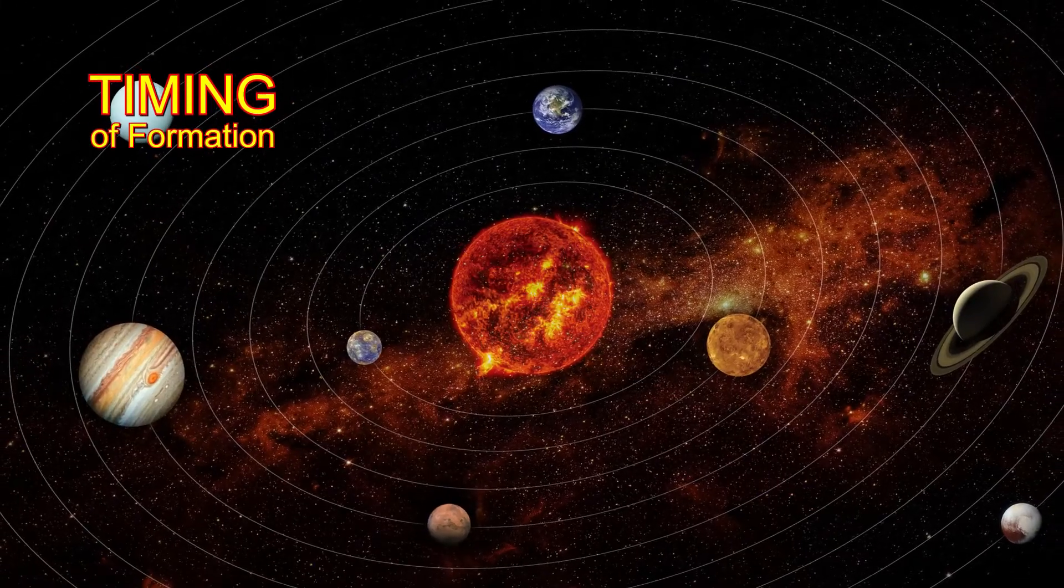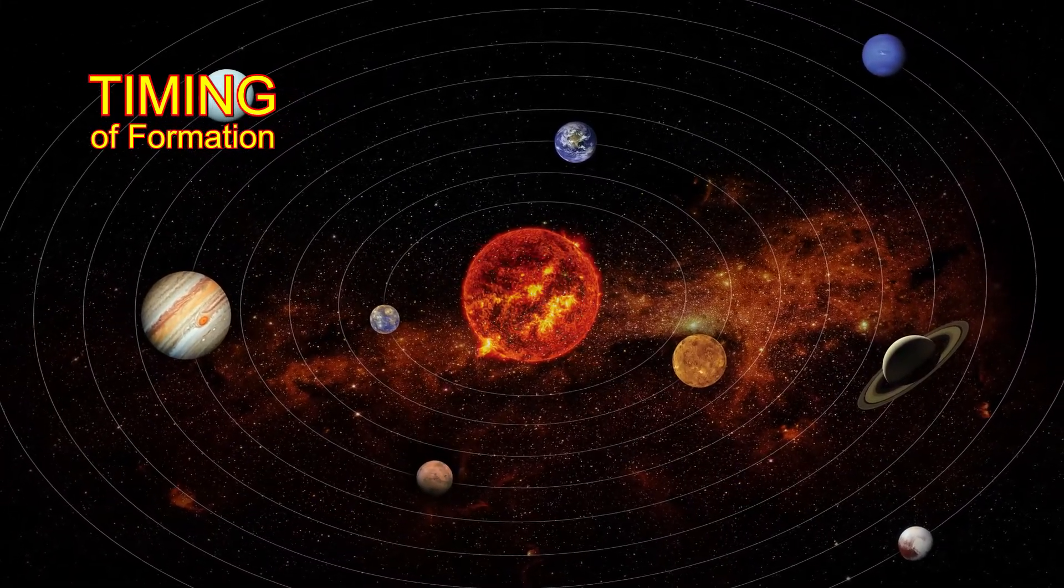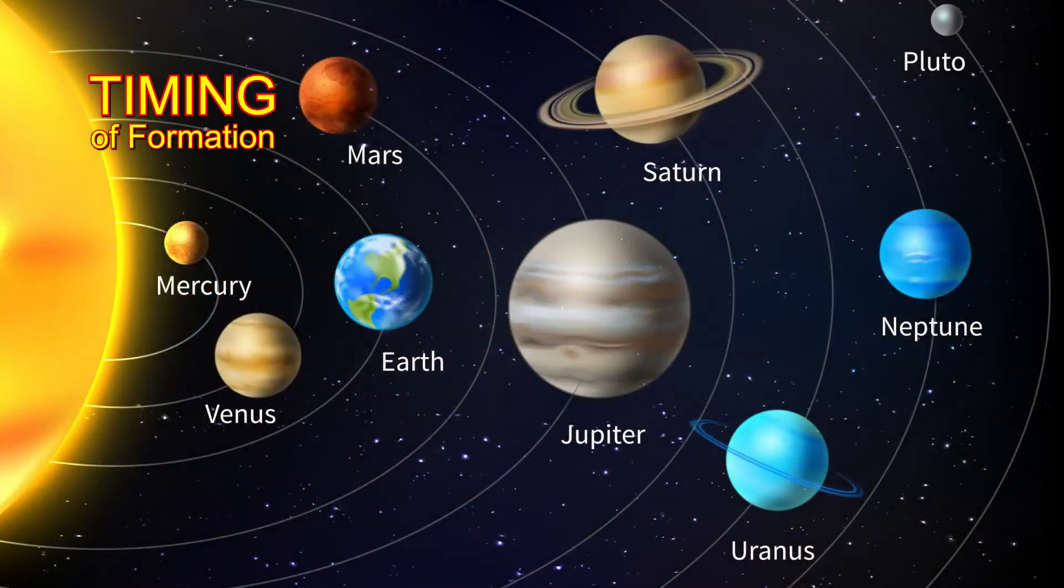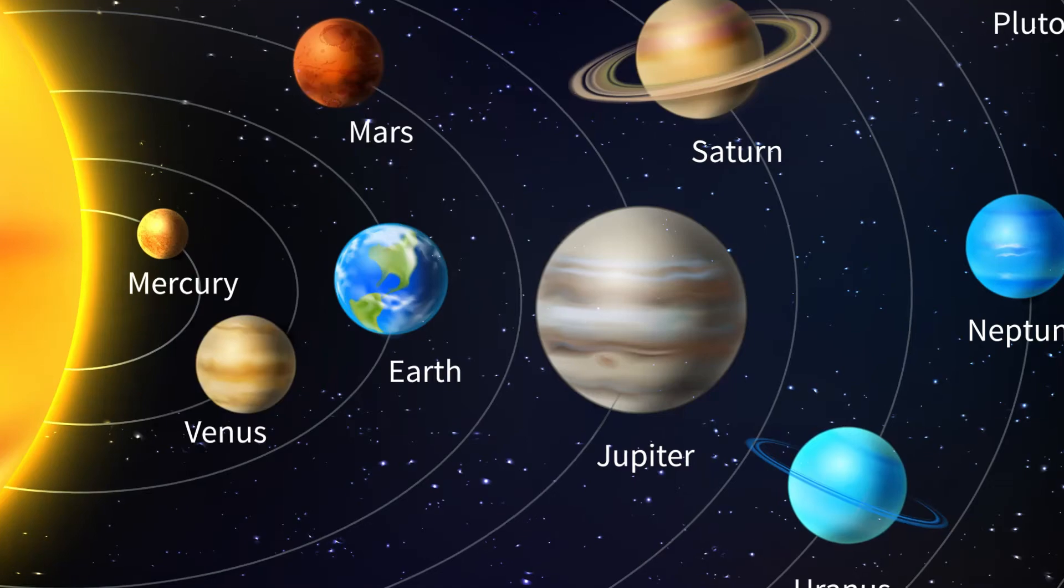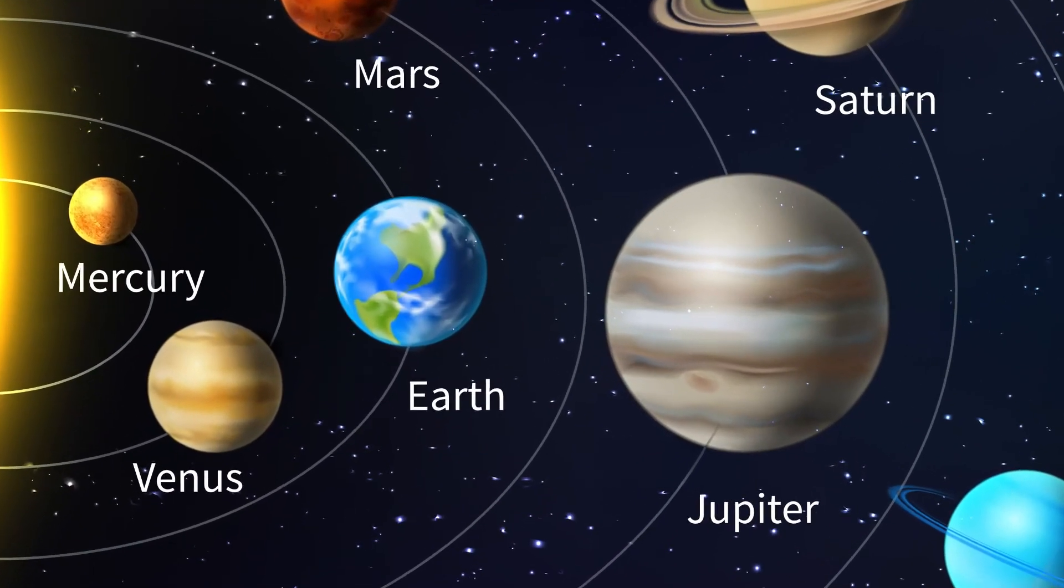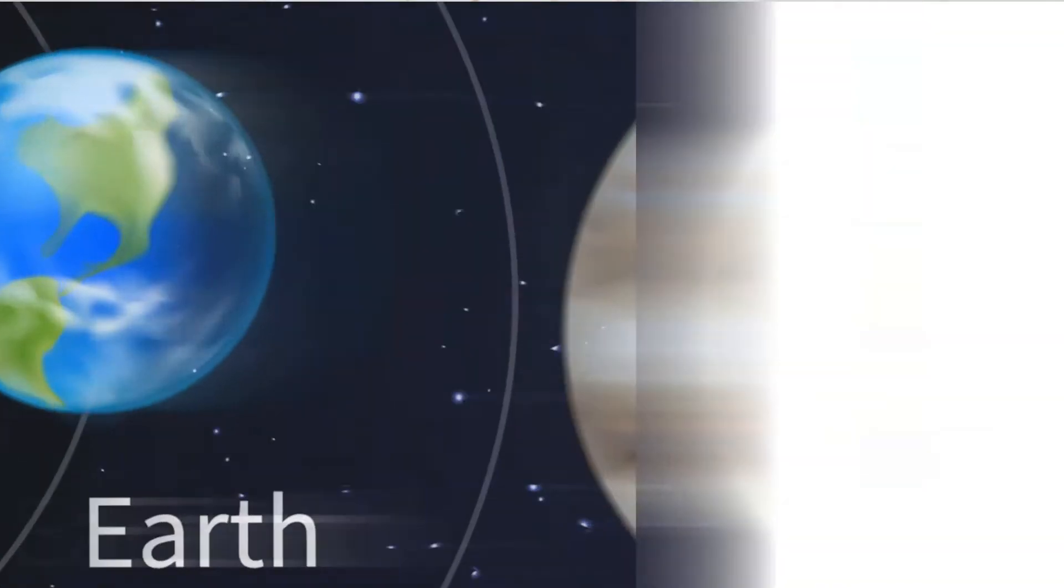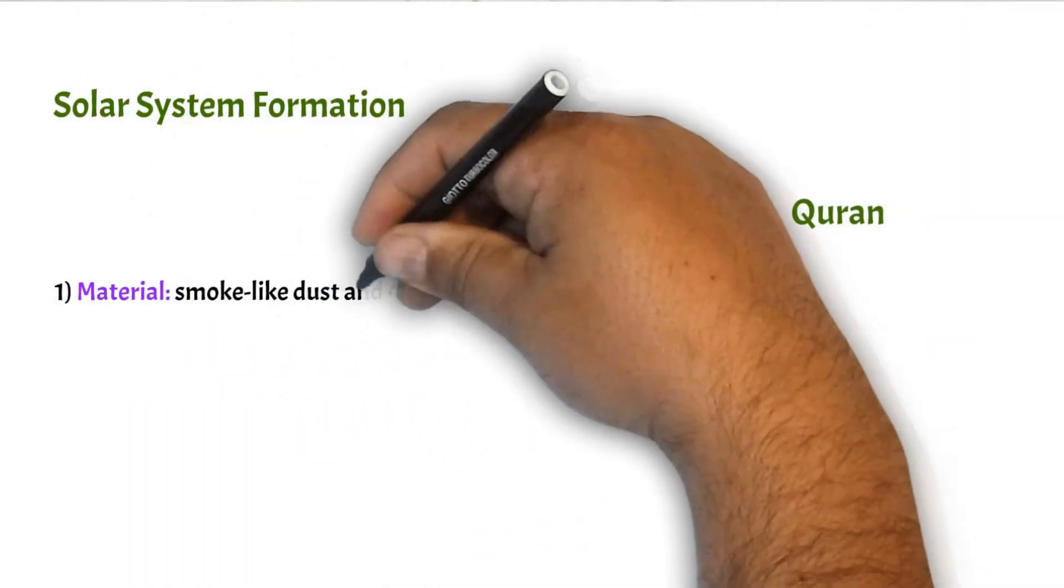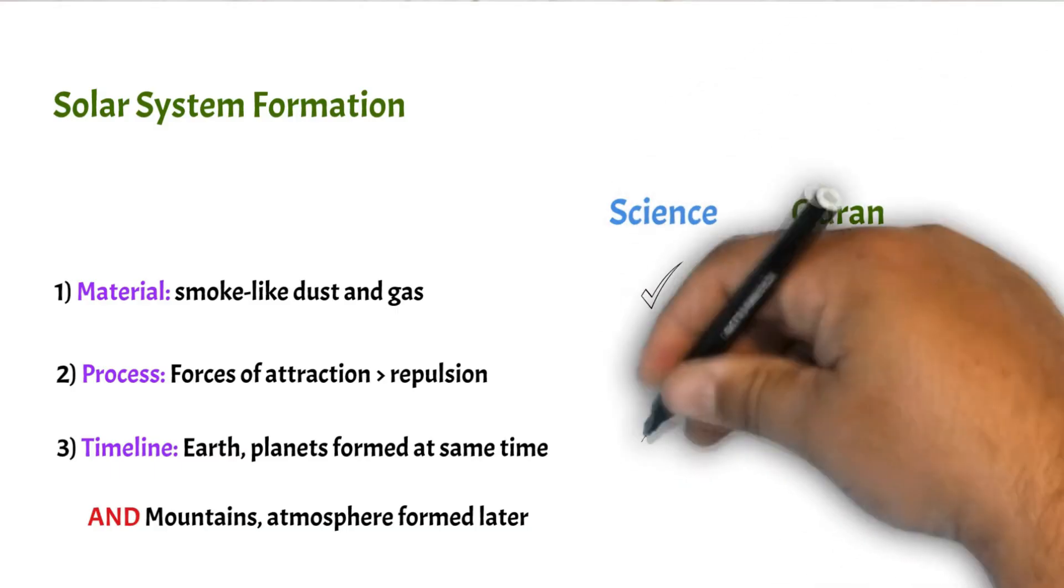And when did the earth and the seven skies or planets form? During the two days or eons. Logic tells us that these must be the same two days or eons mentioned in verse 9, since they both involve the initial formation of the earth. So, based on the timing, the material, and the processes mentioned, it is clear that these verses are describing the formation of our solar system.